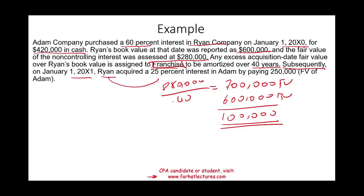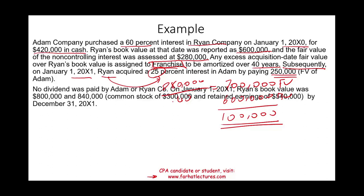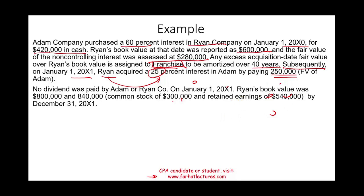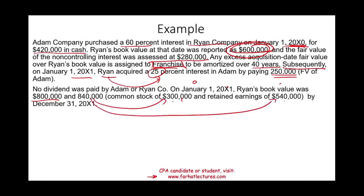Subsequently, on January 1, 20X1, Ryan decided to buy 25% of Adam Company by paying $250,000, which represents the fair value of that stake. So Ryan went back and purchased 25% of Adam's stock — this is the mutual ownership. No dividend was paid by either company. Ryan's book value on January 1, 20X1 was $800,000, and by end of year it was $840,000, representing $300,000 in common stock and $540,000 in retained earnings.